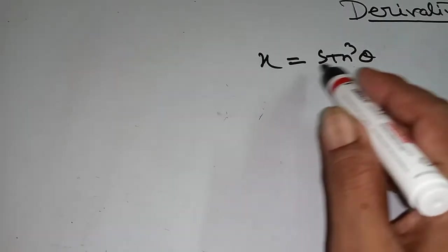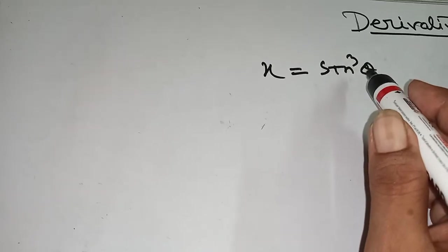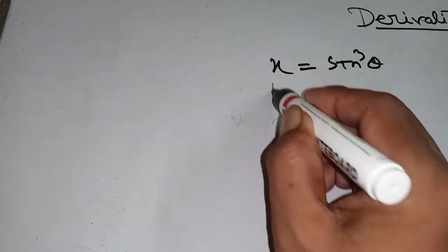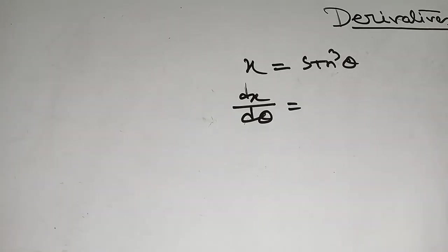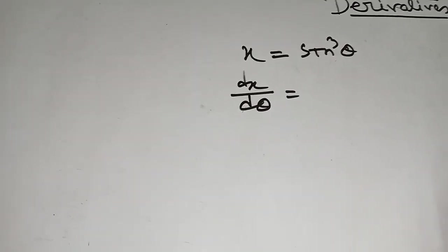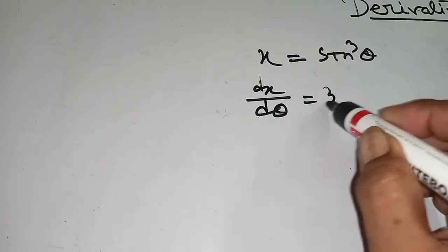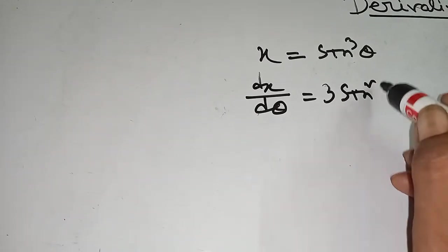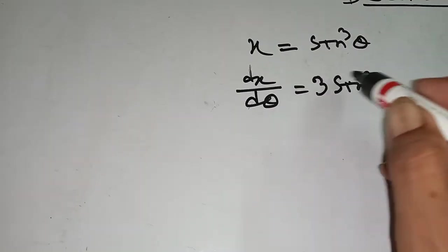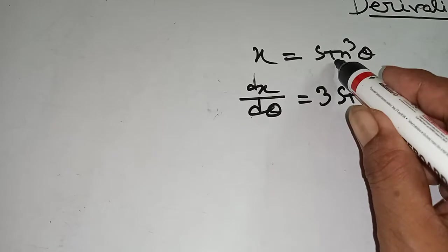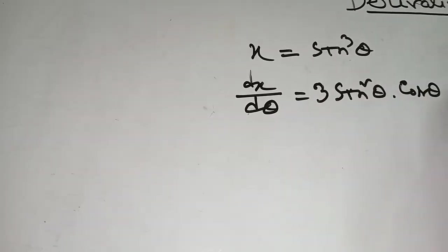First, take x equal to sin cube theta and differentiate both sides with respect to theta. dx/dθ: the derivative of sin cube theta — power comes first: 3 sin square theta, power decreases by 1, into d/dx of sin theta, that means cos theta, into d/dθ of theta, that means 1.